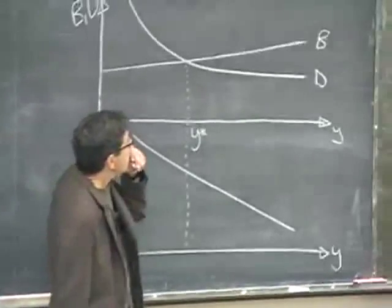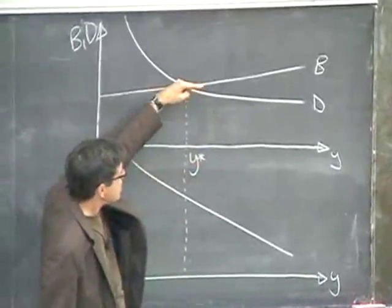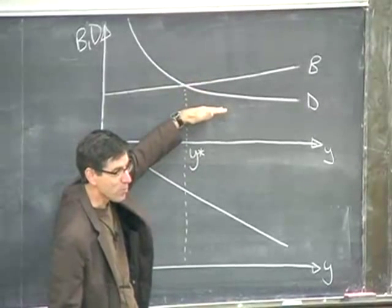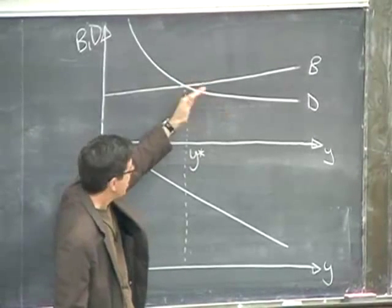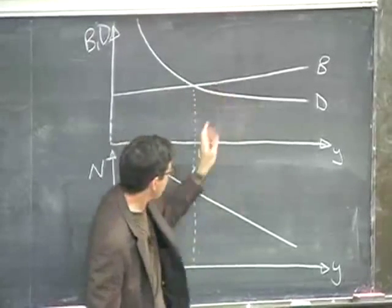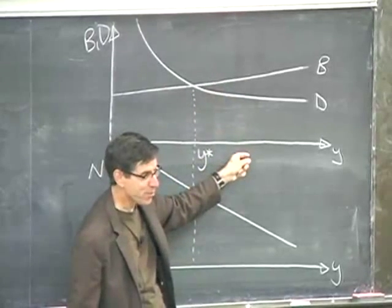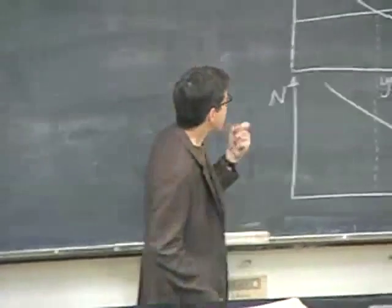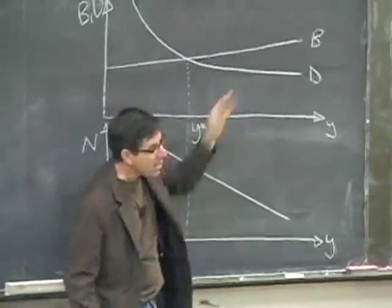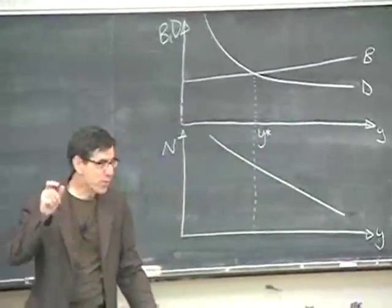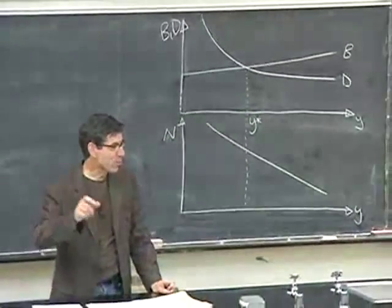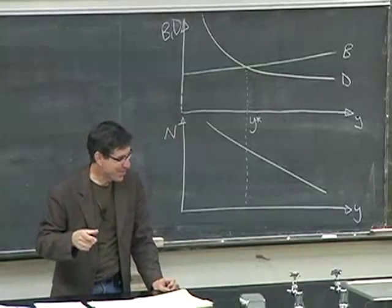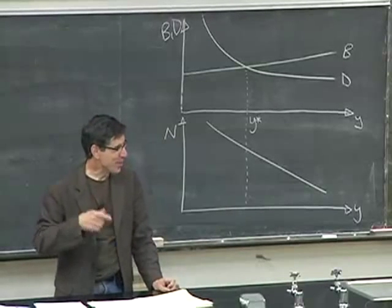The way we can most easily improve living standards is simply by reducing the birth rate at all standards of income. That will have two effects: it'll push the equilibrium to the right, increasing material living standards. And secondly, because life expectancy is the inverse of the birth rate, it'll also increase life expectancy in these societies. That part actually fits with our normal intuitions.